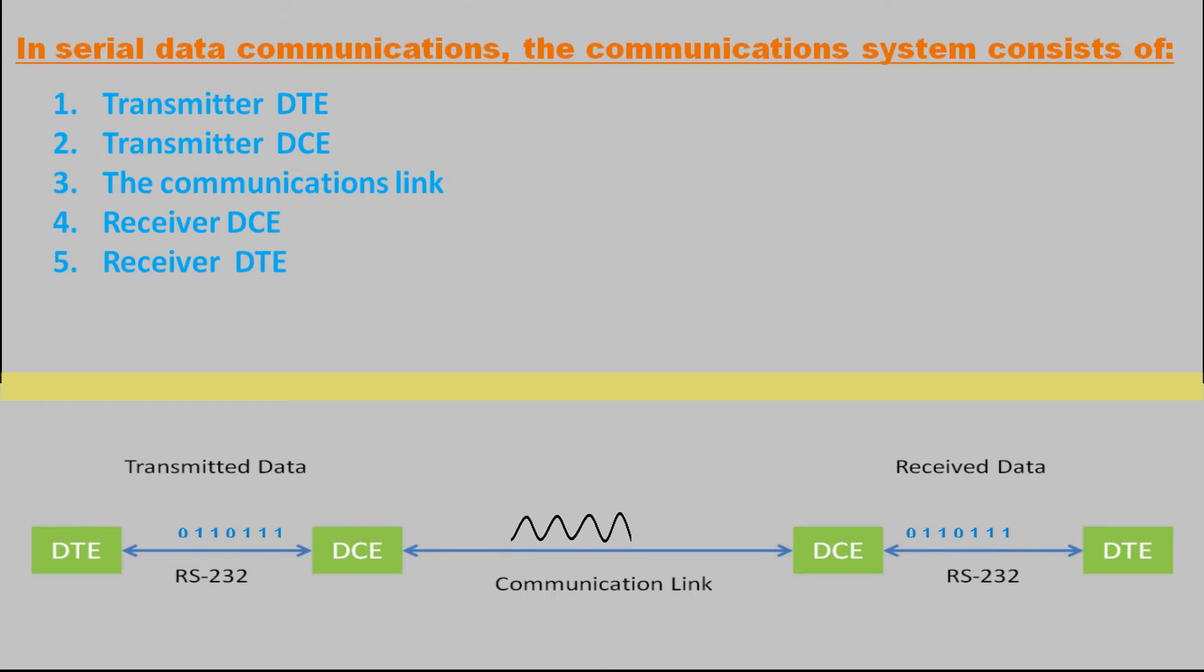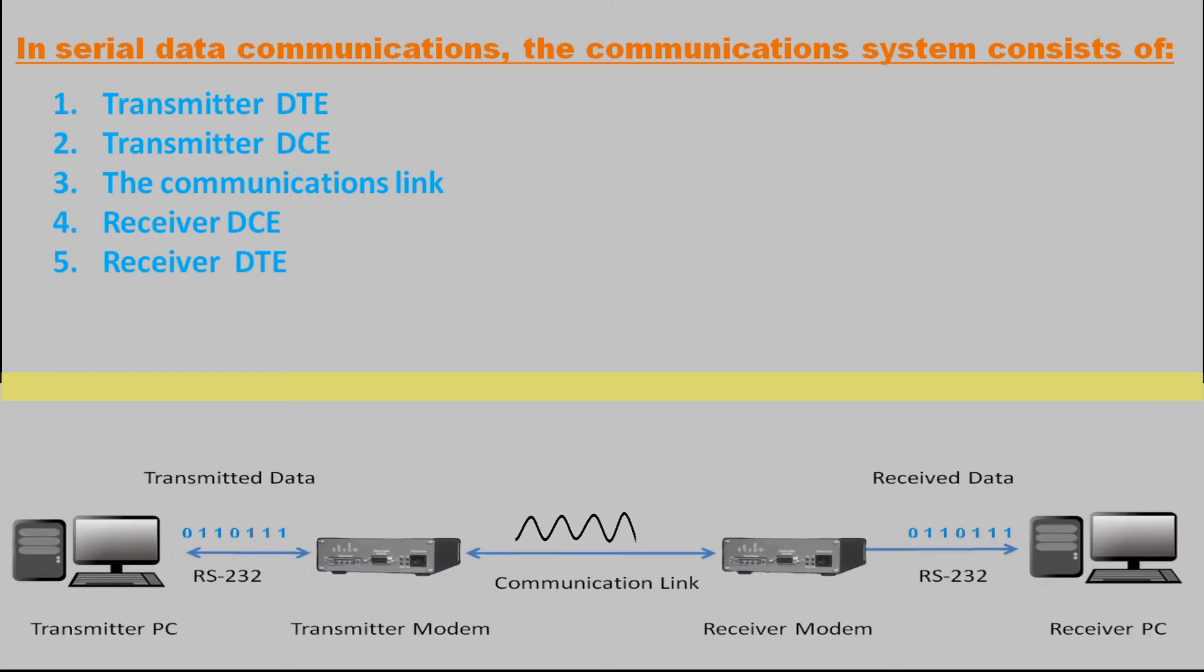In a nutshell, the transmitter side DTE sends the data to the transmitter side DCE which then transmits the received data to the receiver side DCE. Finally, receiver side DCE sends the data to receiver side DTE. This is how communication happens in RS232 standard.